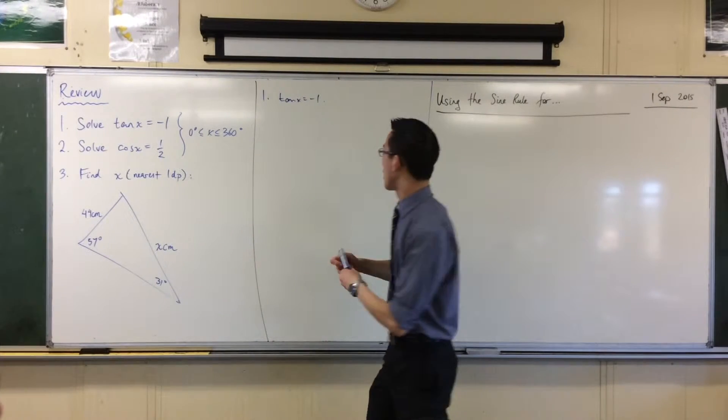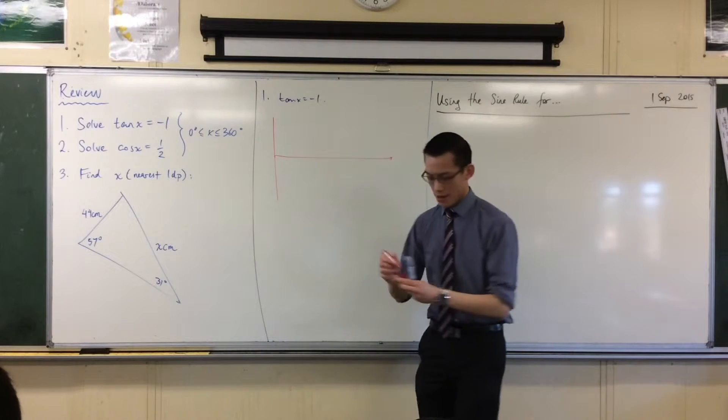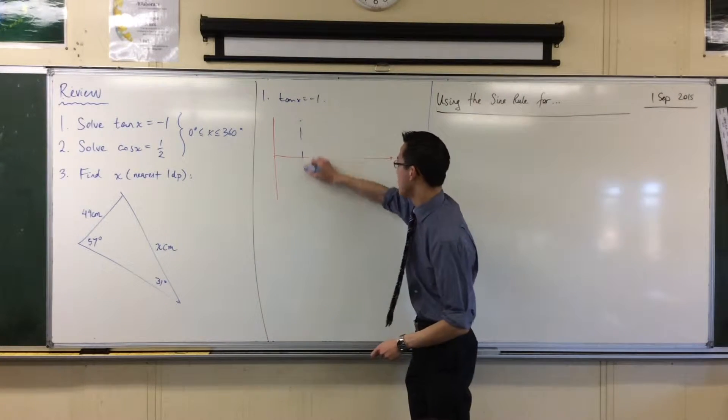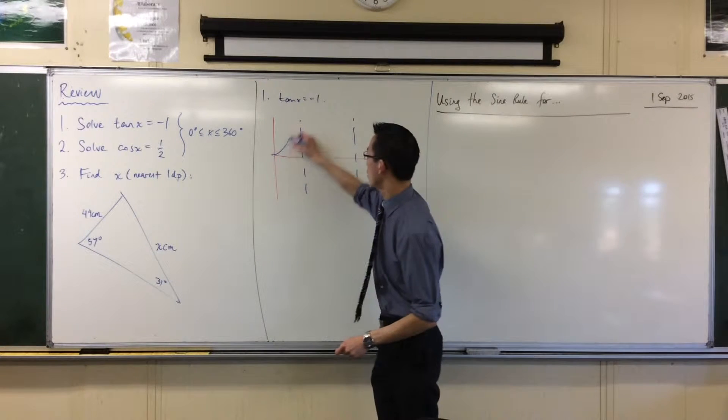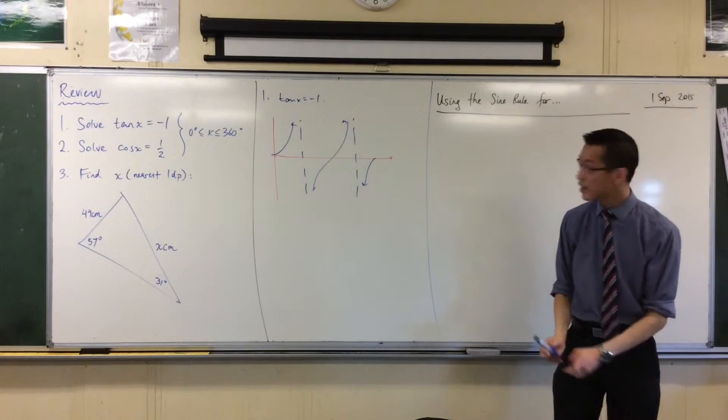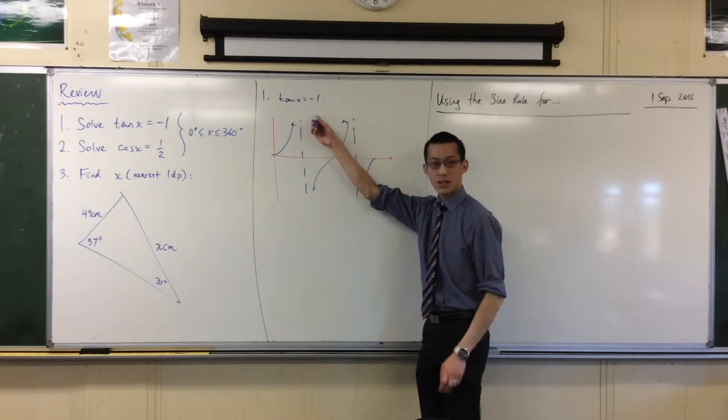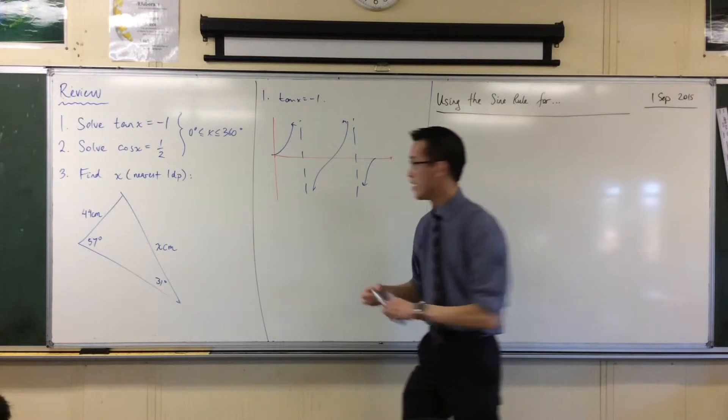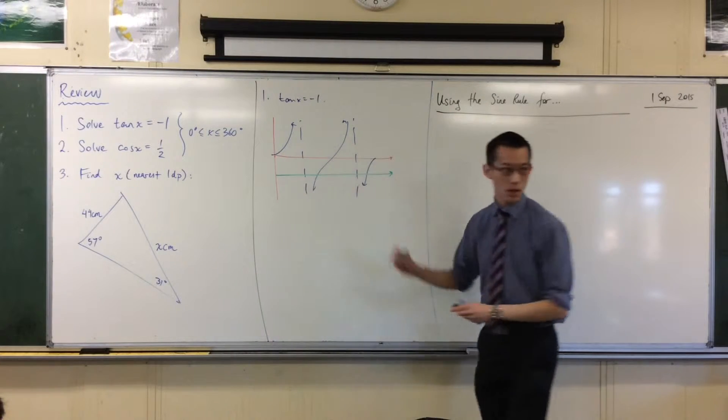So when I draw this guy, do you remember how I did my rough, really fast version of tan? Here's my even faster version of tan, one, two, three, there you go, so I've got the rough idea. Now where is negative one on this graph? Well, it's going to be below the axis, isn't it? And I draw my horizontal line through.